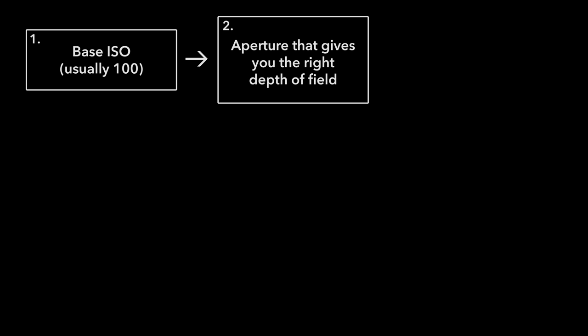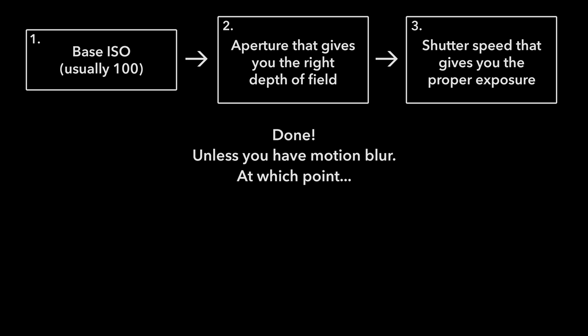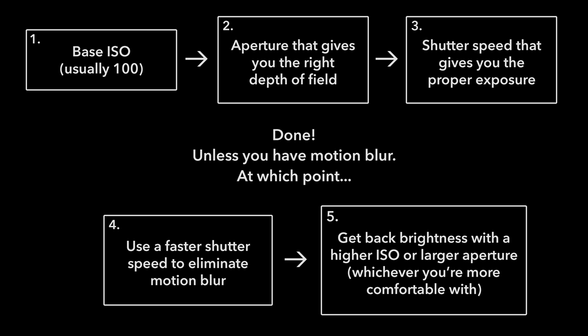Let's go back one last time to the system. You start with ISO — set the base ISO on your camera, which for most cameras is ISO 100. Next, go to aperture and set whatever aperture gives you the right depth of field, whether you want a shallow focus effect or a huge depth of field. Then go to shutter speed and set the value that gives you a proper exposure. A lot of times you'll be done after this step. The exception is if you're getting motion blur at that shutter speed — if you don't want motion blur, you have to set a faster shutter speed, but now your photo is going to be too dark. So the final step is to get back that brightness, either by changing the ambient light, using a higher ISO, or potentially a larger aperture. Each one has a compromise. I personally tend to start with ISO because I'm very picky about my depth of field, but as I showed in the Milky Way photo, sometimes that just won't be possible.